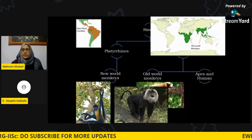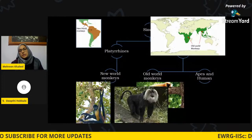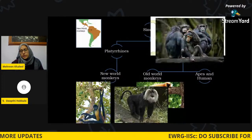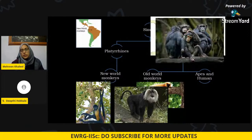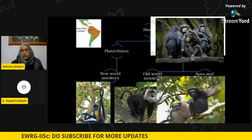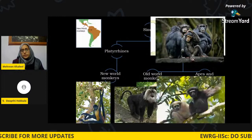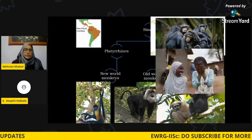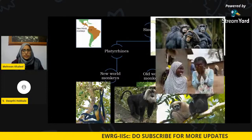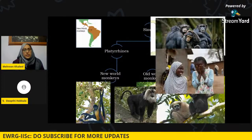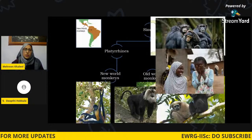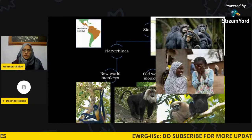Under apes, there are greater apes — such as chimpanzees and gorillas — and lesser apes, like the hoolock gibbon. Humans are also classified within this group with different races. Colloquially, all monkeys altogether, excluding humans, are called non-human primates.